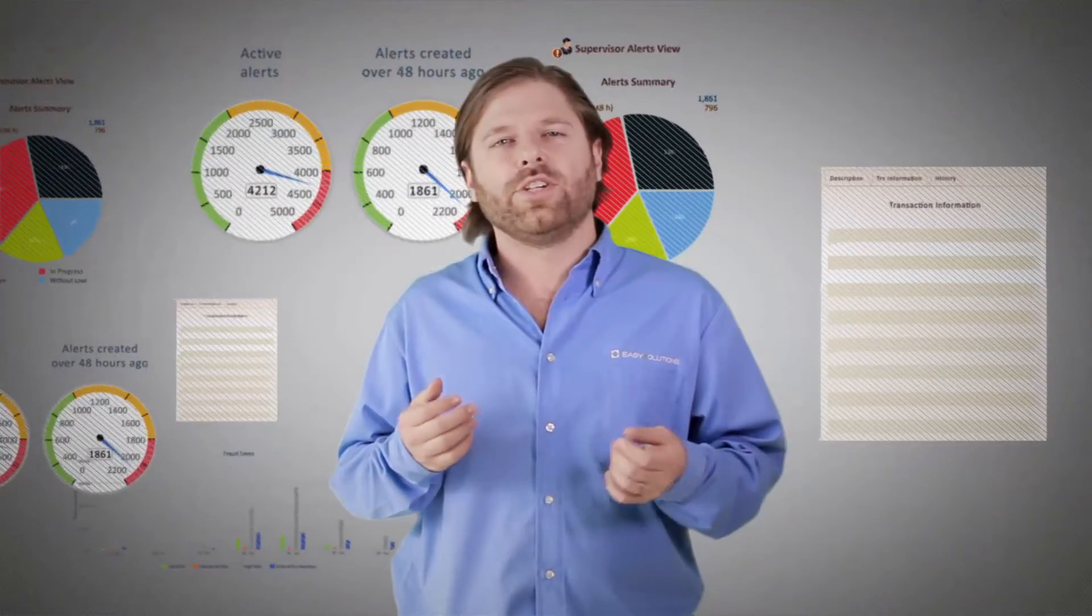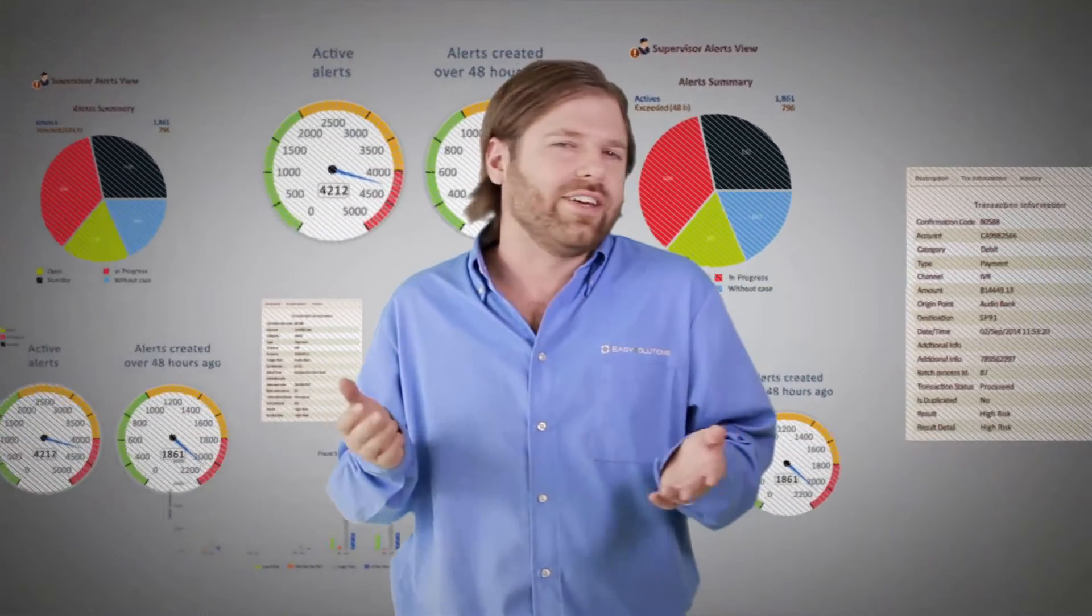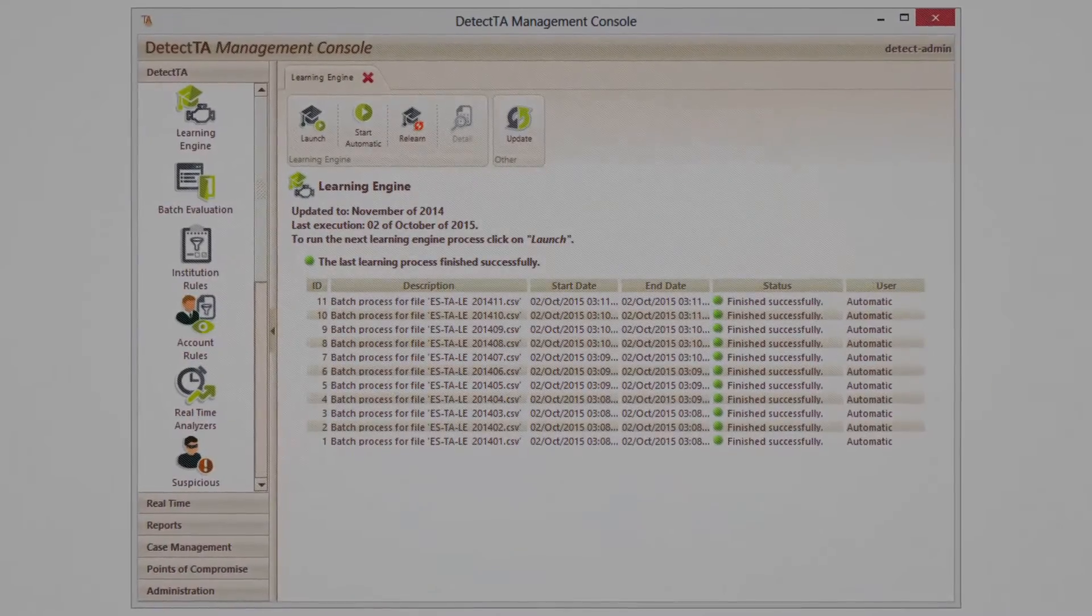Unlike first-generation risk monitoring systems that can only configure and combine rules, the TechTA has a heuristic engine that is learning user behavior over time to give an instant risk qualification of any transaction in real time.